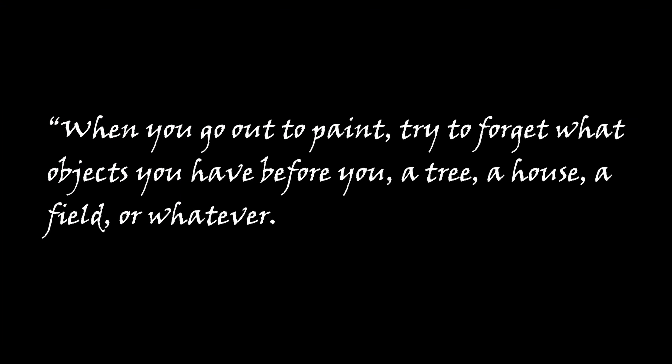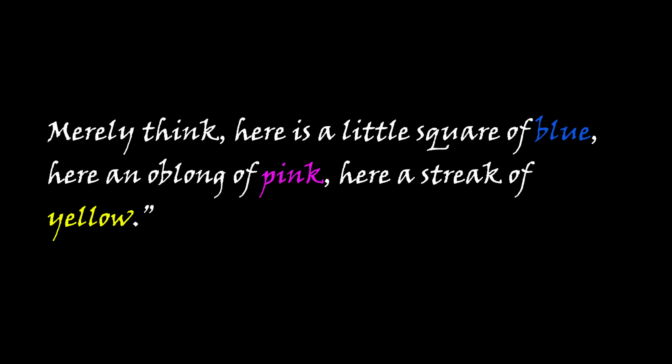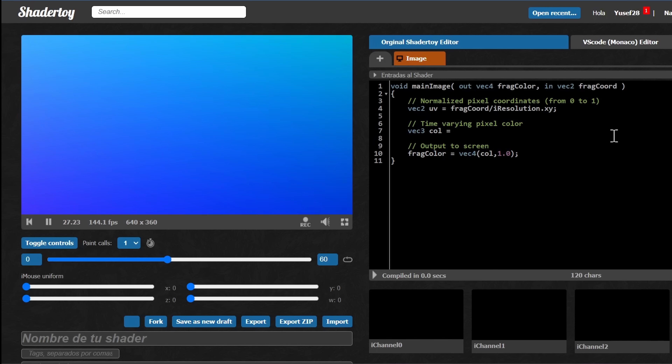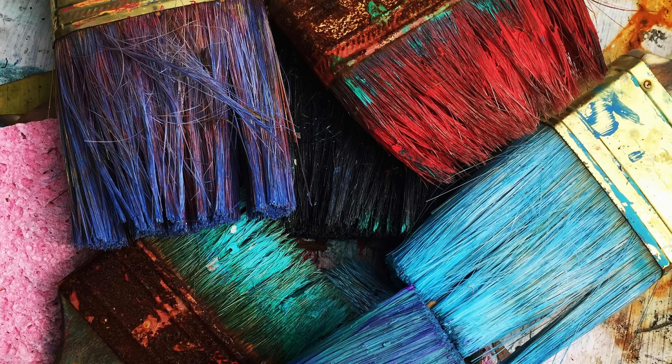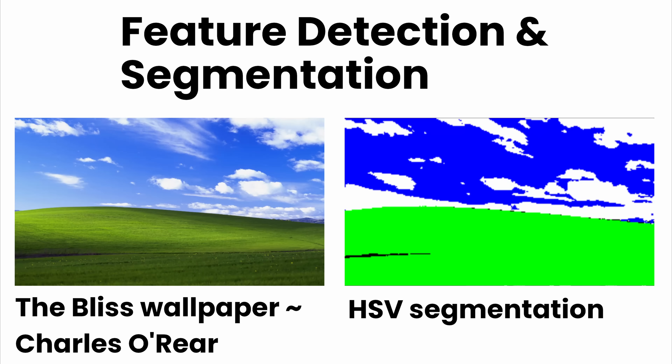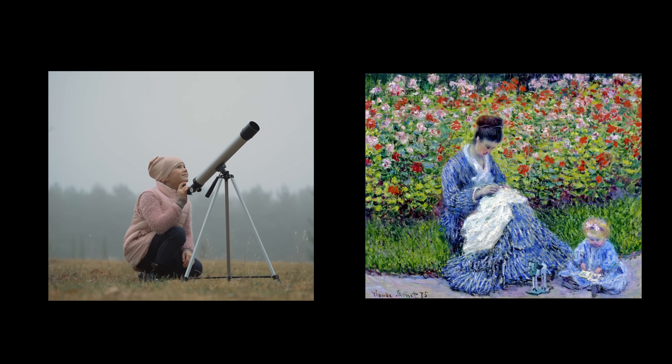Monet said: when you go out to paint, try to forget what objects you have before you — a tree, a house, a field, or whatever. Merely think, here is a little square of blue, here an oblong of pink, here a streak of yellow. If we take this too literally, we'd write a shader that just duplicates the image pixel by pixel. To make a painterly shader, we need feature detection, but we, the artist, still need to do the observing and the painting. So: if the shader finds a feature like a color at a pixel, we the artist choose what stroke technique to use there, based on our observations of real life and Monet's style.